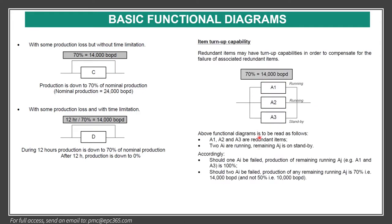Here is turnup capacity. For example, redundant items may have a turnup calculation in order to compensate for the failure of an associated redundant item — some 70% will go through this. For example, if one of these fails, the other two will work: two running, one doesn't work.